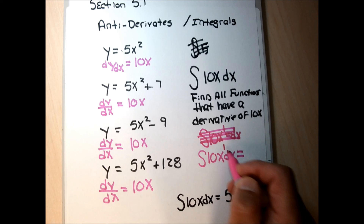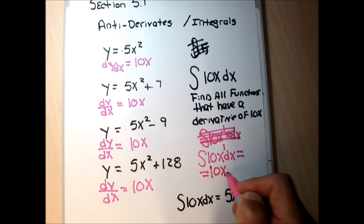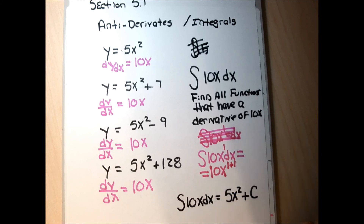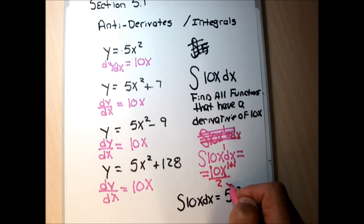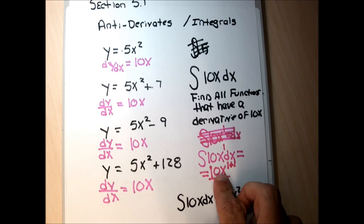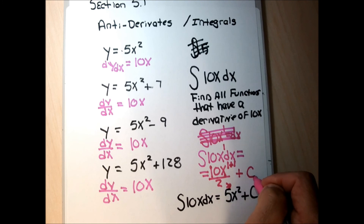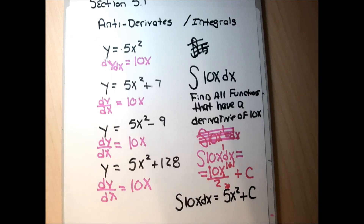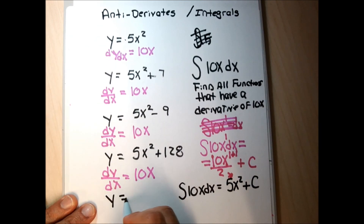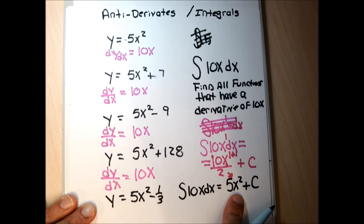So for example, 10x is really 10x to the first. When I integrate, I take the exponent — instead of subtracting 1, I add 1 and get 2. Then instead of multiplying by 2, I divide by 2. That gives me 10 divided by 2, which is 5, and x to the 1+1 gives x squared. There are lots of functions with the derivative of 10x, so we tack on plus C.